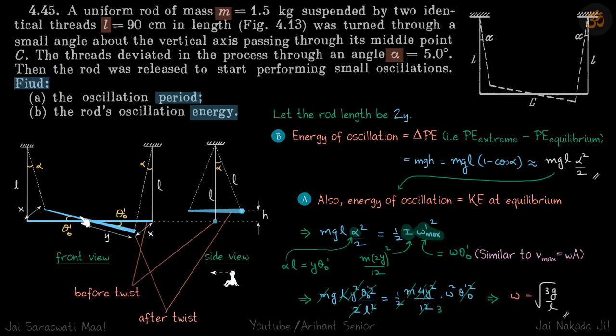You can see if this distance is x, this distance x can be written as L into theta naught dash. It can also be written as L into alpha. So alpha L is equal to L theta naught dash. We'll replace alpha from here.